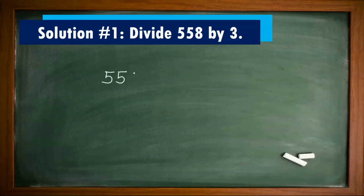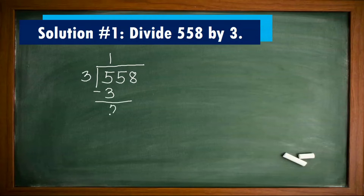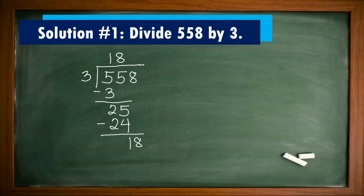Solution number 1: Divide 558 by 3. 5 divided by 3 equals 1; 1 times 3 equals 3; 5 minus 3 equals 2. Bring down 5: 25 divided by 3 equals 8; 8 times 3 equals 24; 25 minus 24 equals 1. Bring down 8: 18 divided by 3 equals 6; 6 times 3 equals 18; 18 minus 18 equals 0. The chairs can be arranged into 3 rows, each row will have 186 chairs.